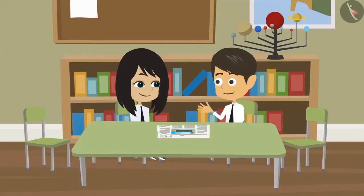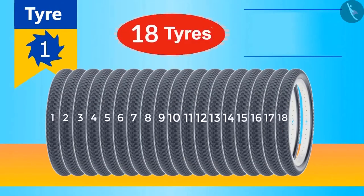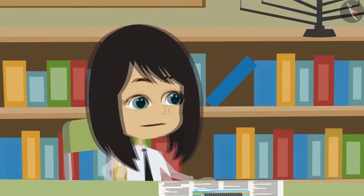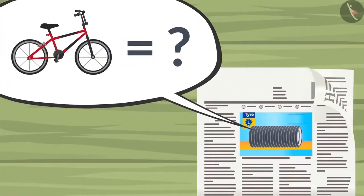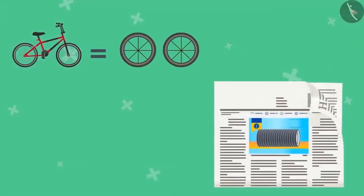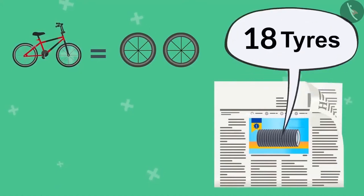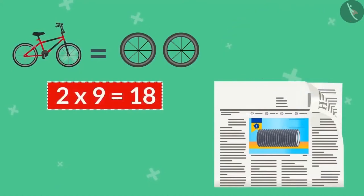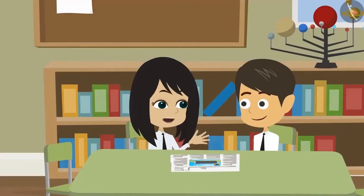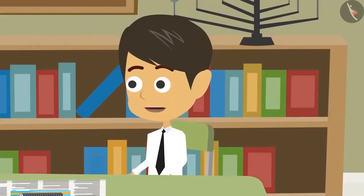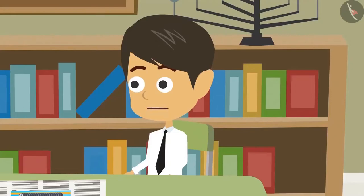Let me try. First, let's count these tyres. There are 18 tyres. If these are bicycle tyres, can you tell me how many bicycles do they belong to? A bicycle has two tyres and there are a total of 18 tyres. Two nines are 18. This means these tyres belong to 9 bicycles. How did you calculate it so fast? I remember the multiplication table of 2. That's how I could answer immediately.